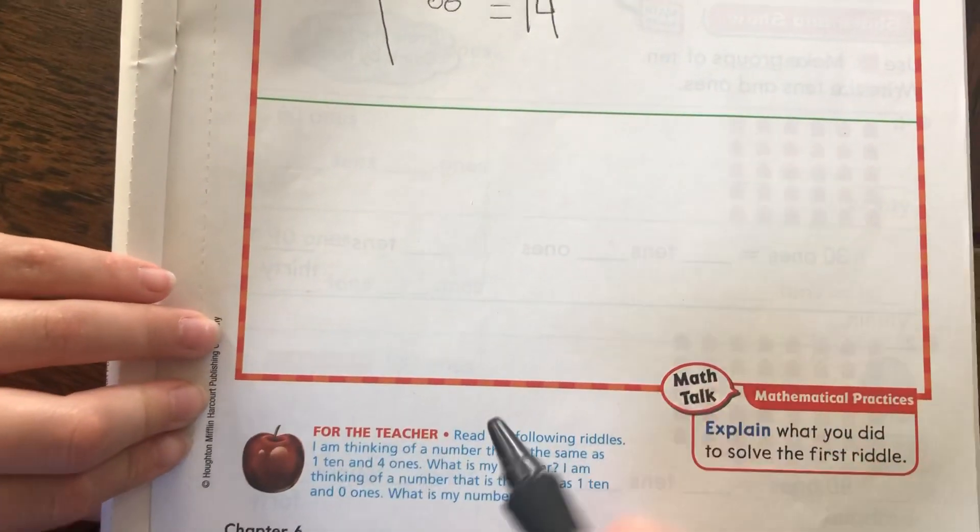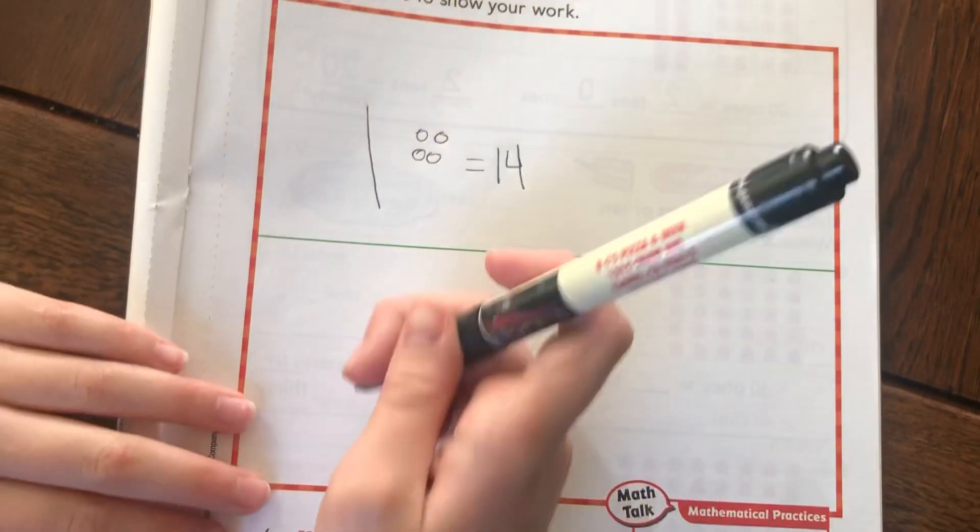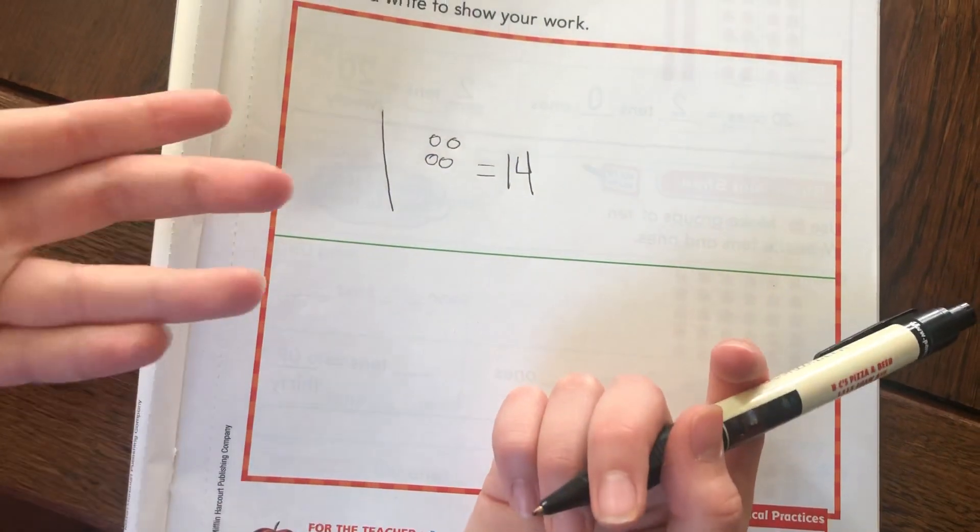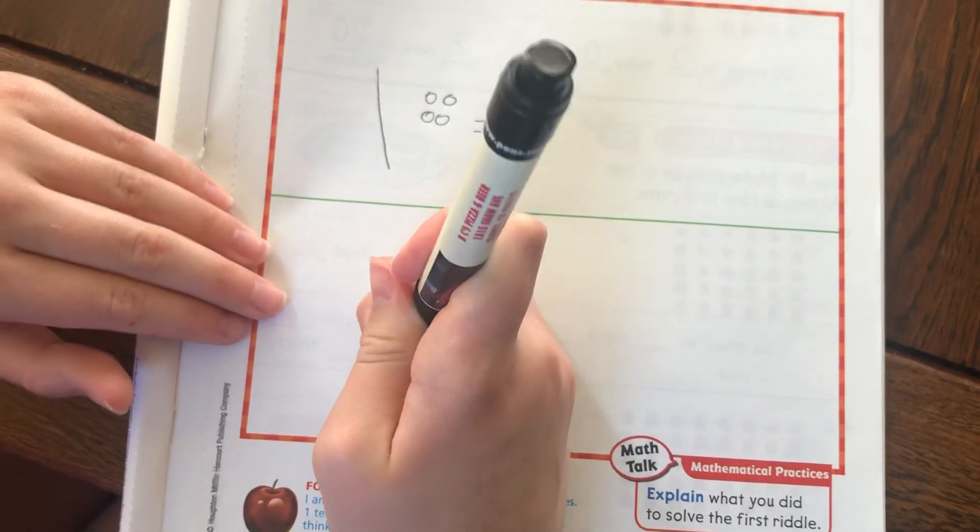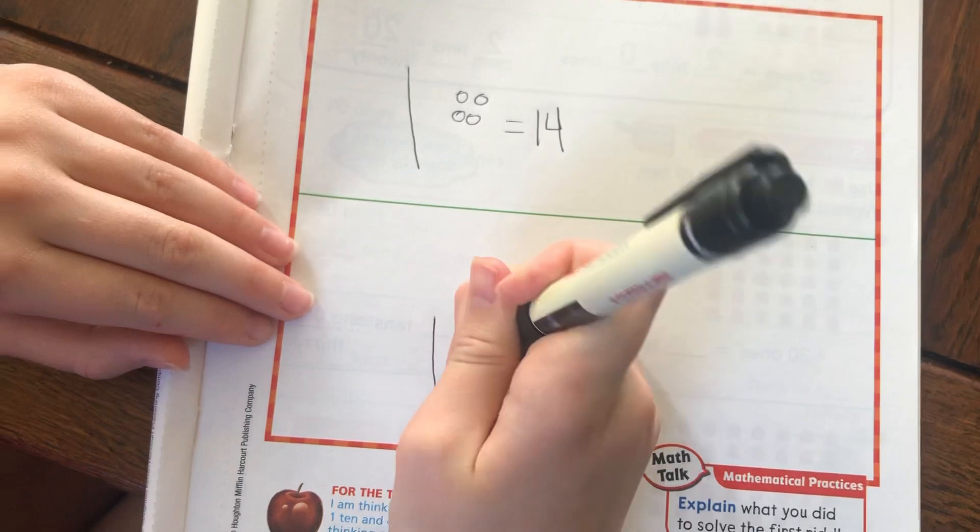But there's another part to the riddle. It says, I am thinking of a number that is the same as one ten and zero ones. What number am I? Well, since it's one ten and there's no ones, then I'm just going to put a ten. One line. And that equals ten.